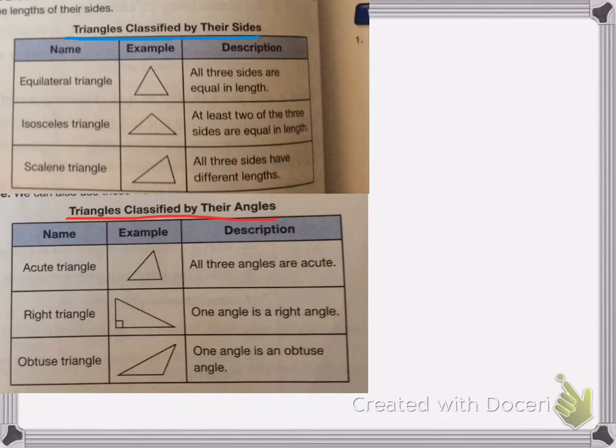So for example, our equilateral triangle has all three sides equal in length. Isosceles triangles have two of the three sides equal in length, and a scalene triangle means all three sides are a different length.